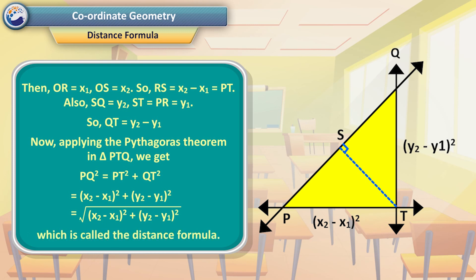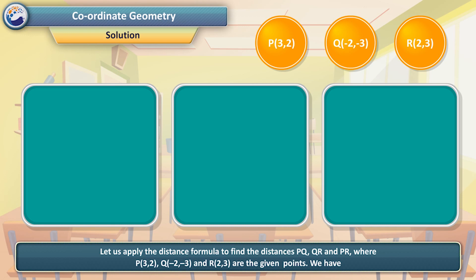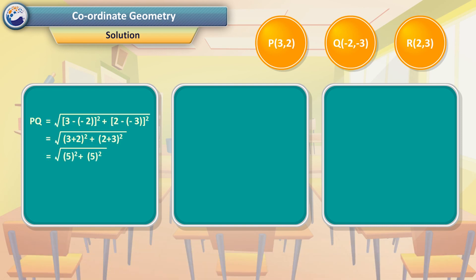Do the points P(3, 2), Q(−2, −3), and R(2, 3) form a triangle? Solution: Let us apply the distance formula to find the distances PQ, QR, and PR. We have PQ = √[(3−(−2))² + (2−(−3))²] = √[(3+2)² + (2+3)²] = √[5² + 5²] = √50 ≈ 7.07.